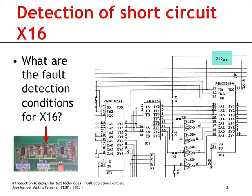We will consider the specific example of fault X16, which is a short fault between the TDO of one device and the TDO of the preceding device in the same boundary scan chain. The jumper that enables us to insert this fault can be seen in this photograph, and IC4 is the device in the middle.